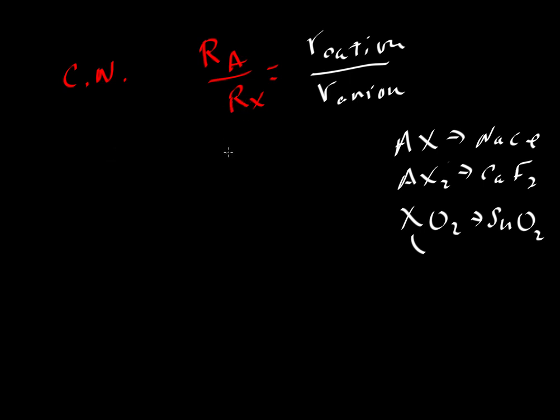If that ratio is less than 0.155, so if the cation is small compared to the anion, then we're only going to be able to fit two anions about it. So that cation will be bonded to simply two anions, no more. And if that ratio is greater than 0.155, but less than 0.225, then we'd get a coordination number of three.